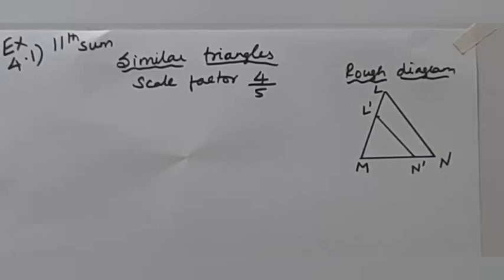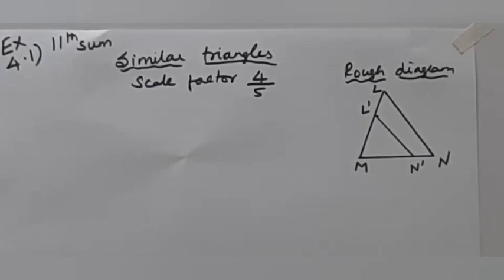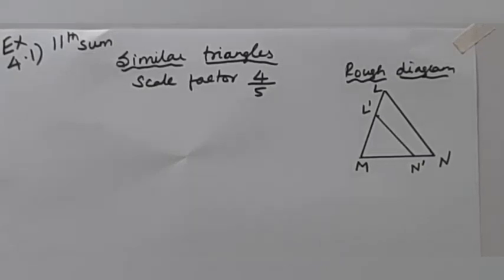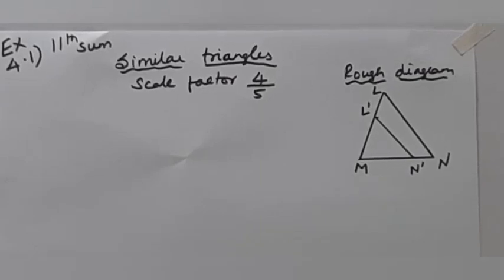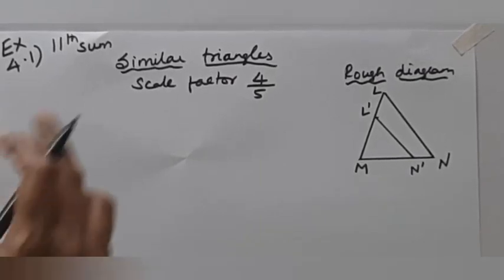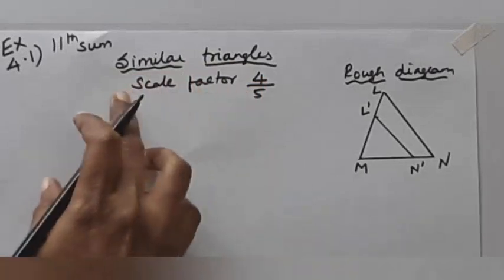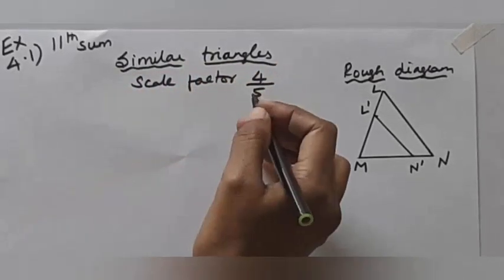Hello students, welcome to Maths and Travel Channel. Exercise 4.11 is on constructing triangles similar to a given triangle LMN with its sides equal to 4 by 5 of the corresponding sides of triangle LMN. Scale factor 4 by 5. Similar triangles for a new scale factor 4 by 5.